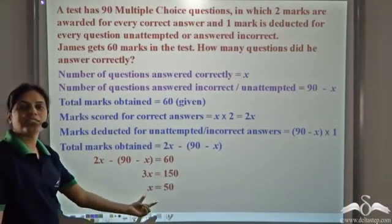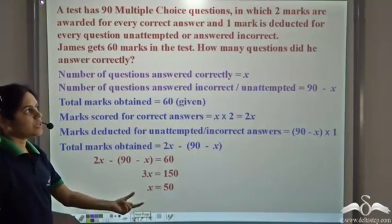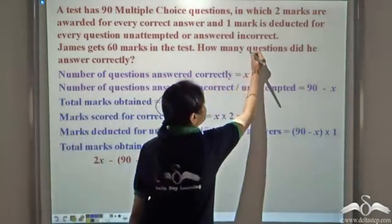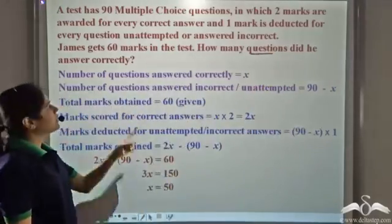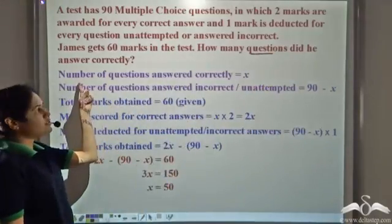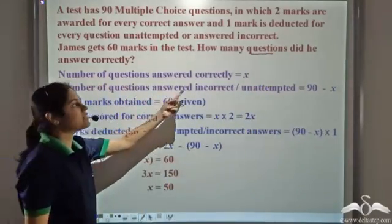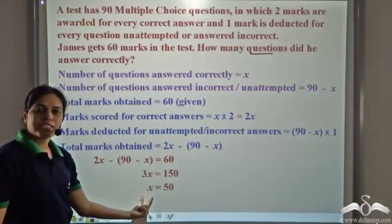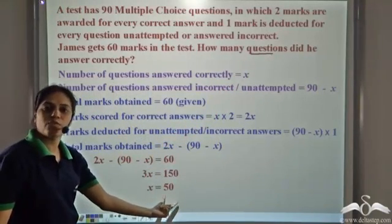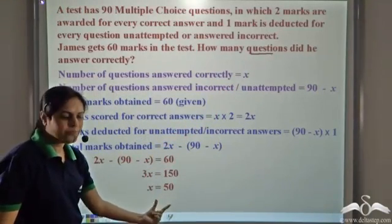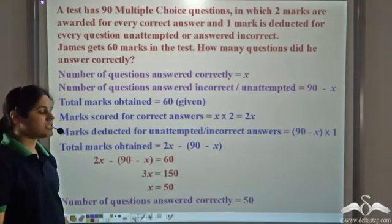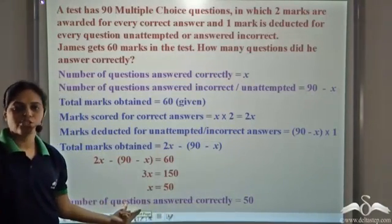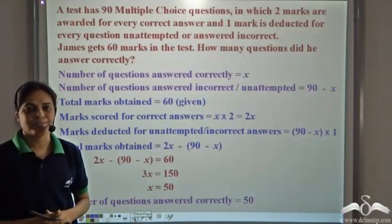So x is equal to 50. We need to find how many questions James answered correctly, and we assumed that to be x. We have solved for x and found x is equal to 50. So the number of questions answered correctly by James is equal to 50. This is the correct answer.